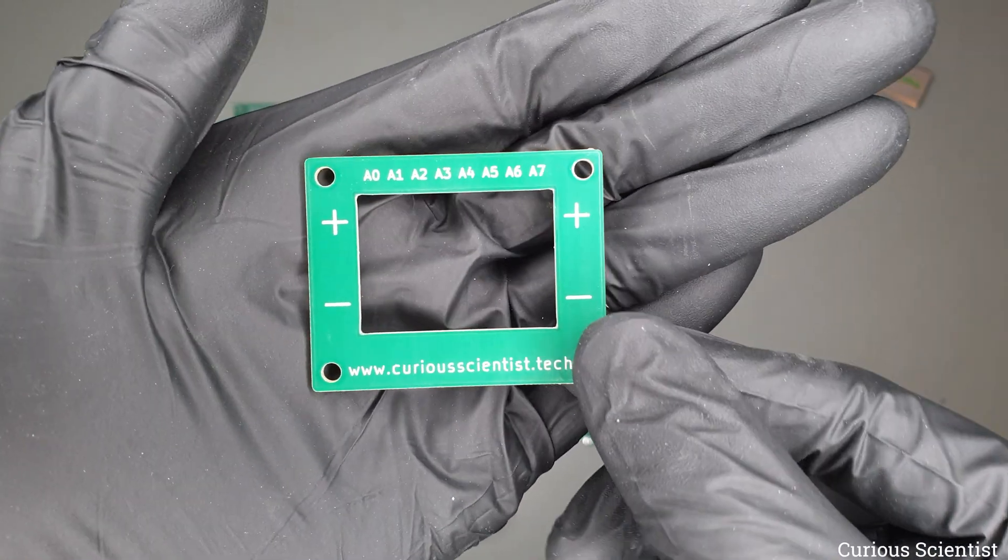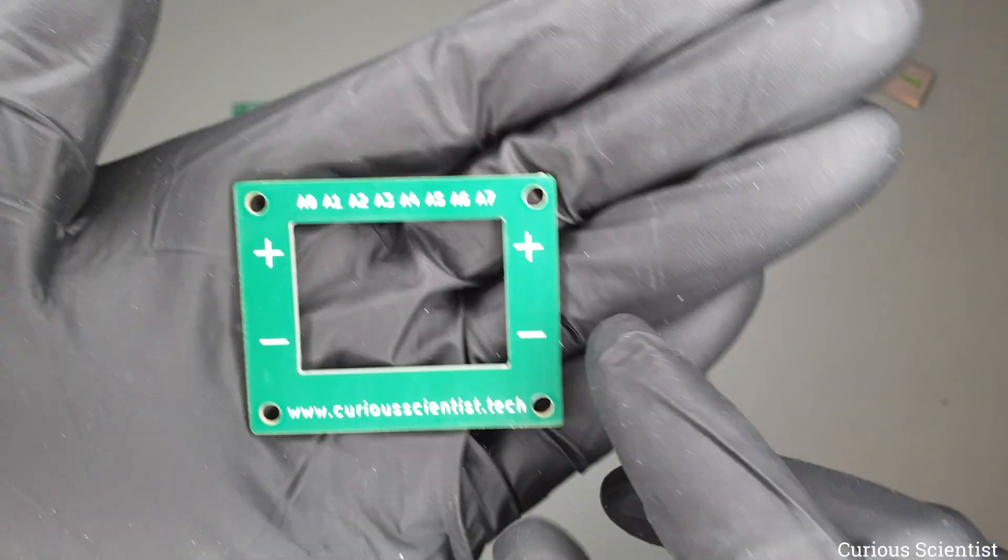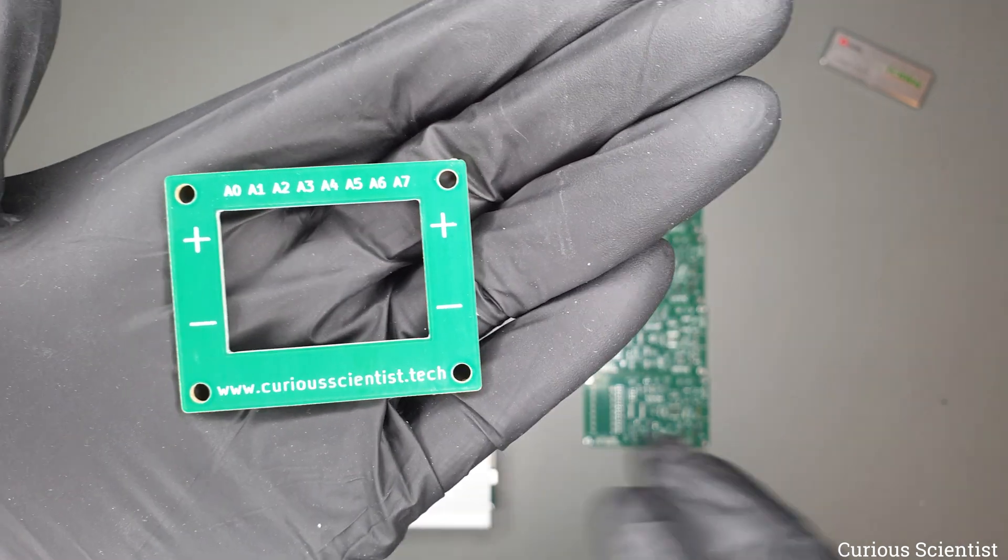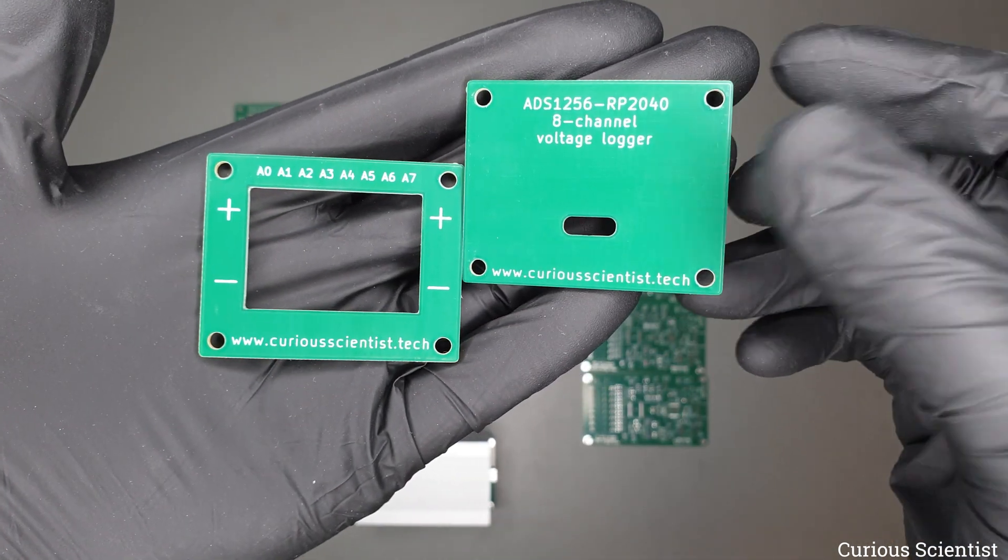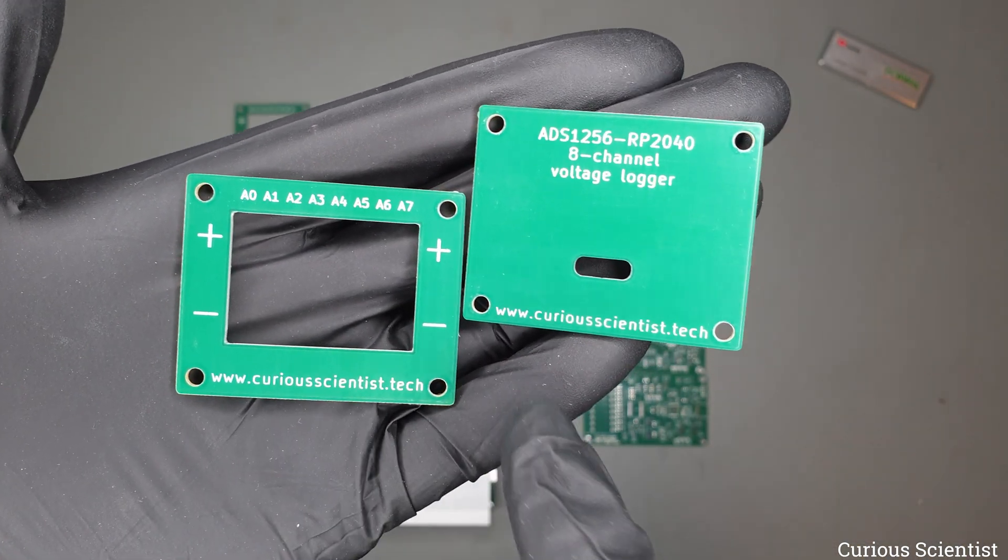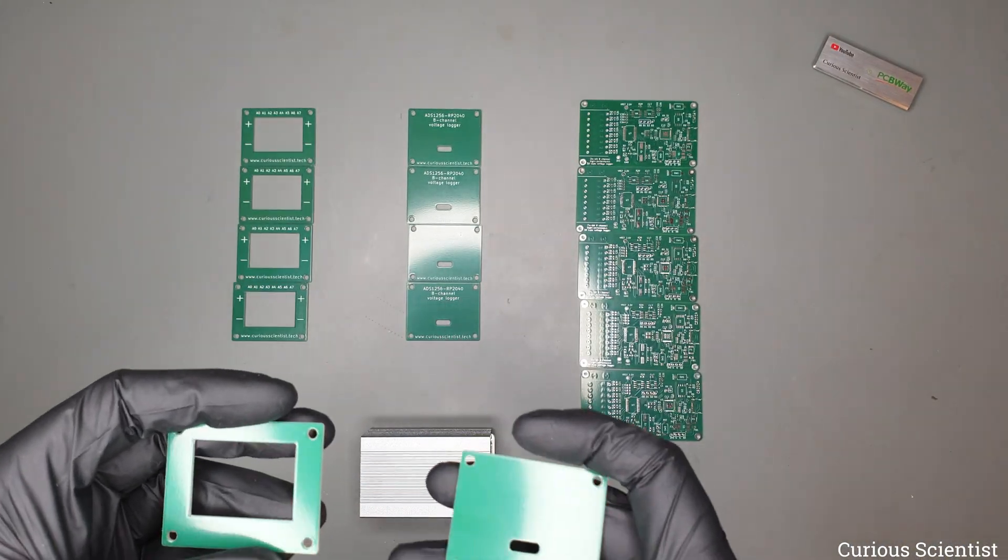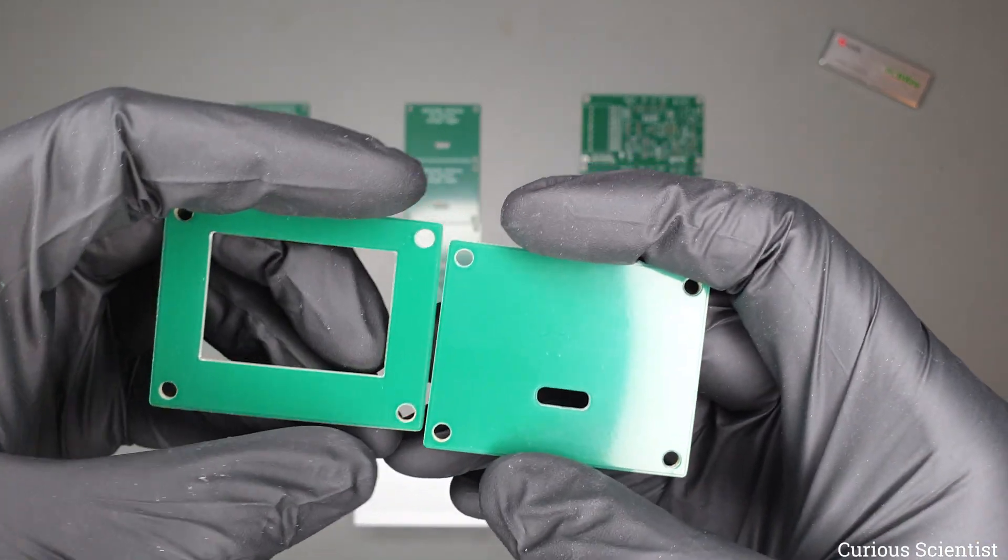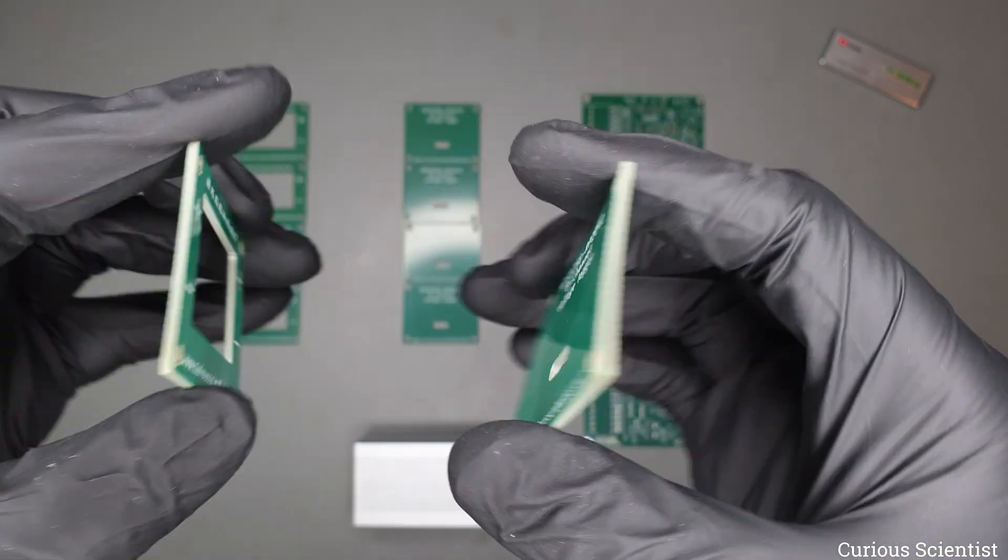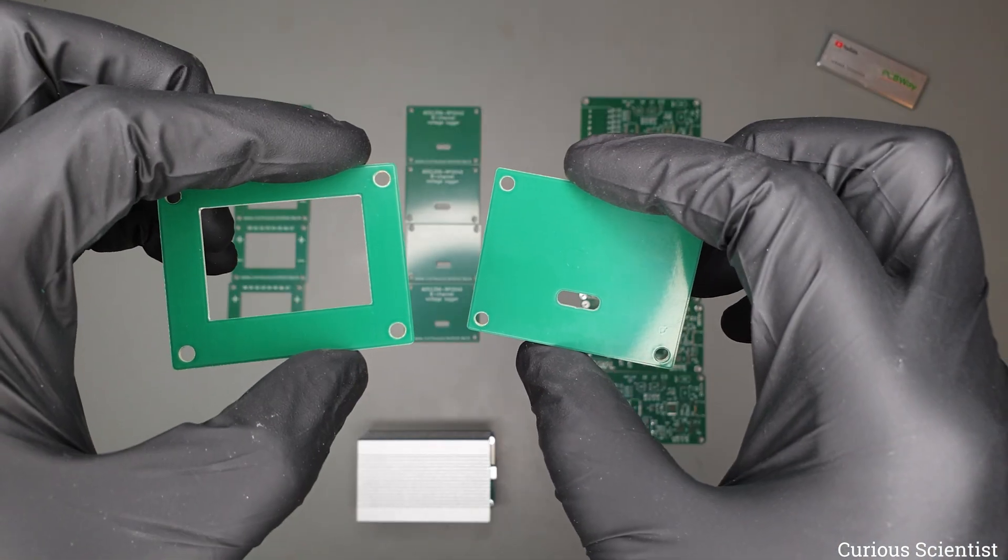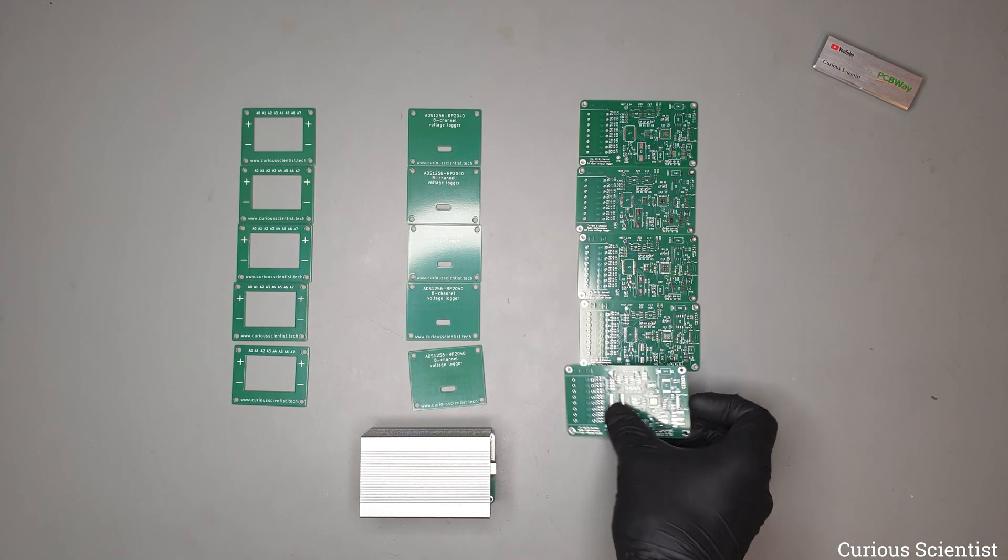I put the channels right there, A0 to A7. The top row is the plus or positive row and then the bottom row of the screw terminals will be the negative row or the common. On both sides I put the website. If you don't want to see these texts, you can just flip this and install it on the enclosure like this.